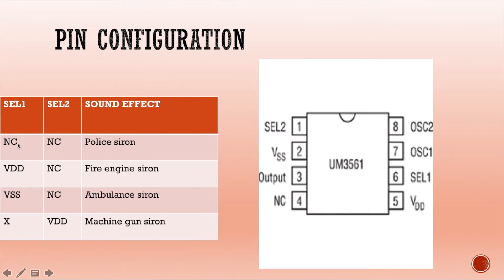NC means no connection. When we connect SEL1 and SEL2 to no devices in the circuit, then a police siren sound can be generated. When we connect SEL1 pin number 6 to VDD and SEL2 pin number 1 to no connection, which means we do not need to connect SEL2, a fire engine sound can be generated.